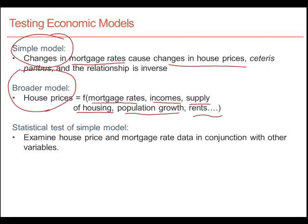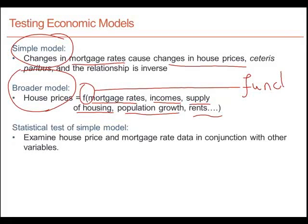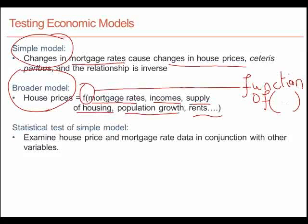When we write the model in this general form, you'll notice that we have used the letter F, which is shorthand to denote that we are imagining house prices to be a function of all the things written in parentheses following F. It's just shorthand for a functional relationship between the variables inside the parentheses on the right-hand side and the variable on the left-hand side. But if we're going to look at economic relationships in two dimensions, we're restricted to look at just one influencing variable on the right-hand side at a time.